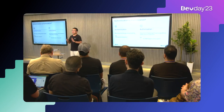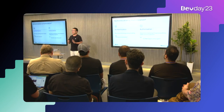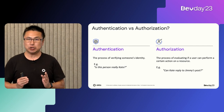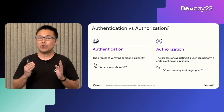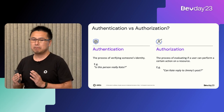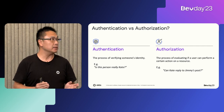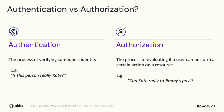To begin with, we need to distinguish between authentication and authorization. Authentication is the process of verifying someone's identity — for example, we ask the question: is this person really Kate? Authorization, on the other hand, is the process of evaluating if a user can perform a certain action on a resource — for example, can Kate reply to Jimmy's post?